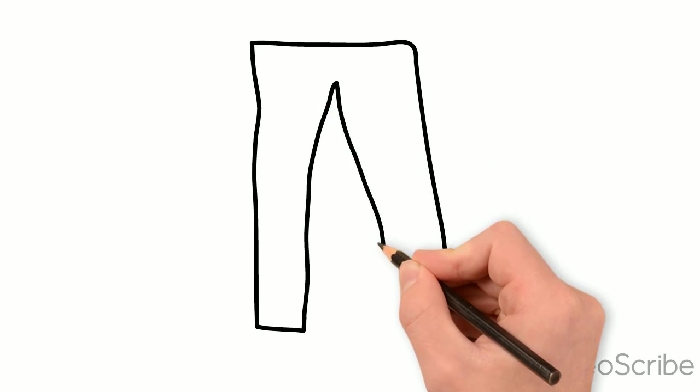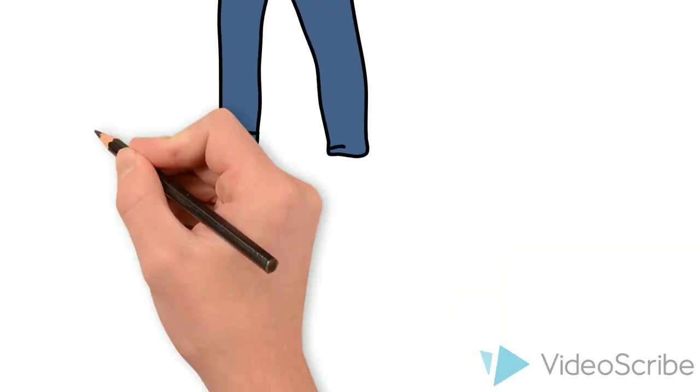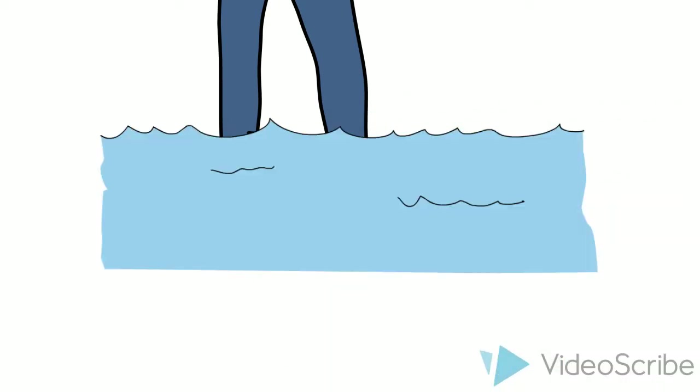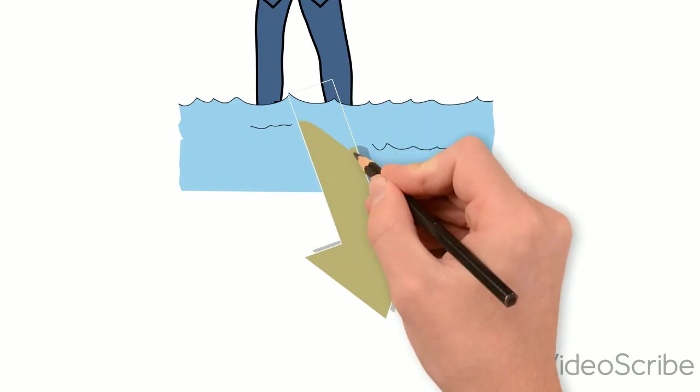Anyways, Elisha picked up his cloak, like his friend's cloak, and whenever they get to the River Jordan, he hit it and they crossed again. It's like whoa, science. That's like some prequel to Moses, right? Yeah, exactly.